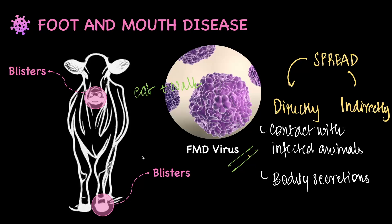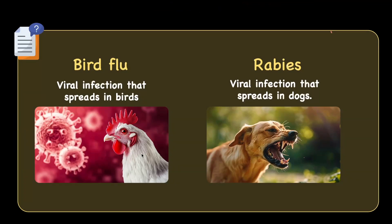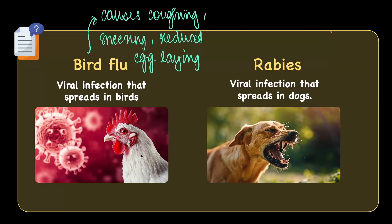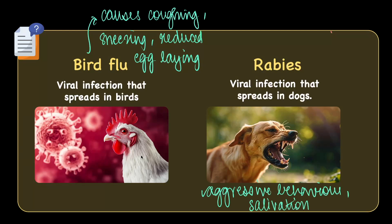Preventive measures for FMD include robust measures like restricted animal movement and isolation of infected animals. Some more common diseases that affect animals include bird flu and rabies. Bird flu is a viral infection that spreads in birds, ultimately causing coughing, sneezes and affecting the egg-laying ability of chickens. Rabies is seen in dogs and is a deadly viral infection — dogs end up showing aggressive behaviour, excessive salivation, fear of water and paralysis. Sadly, it also spreads to humans through dog bite.